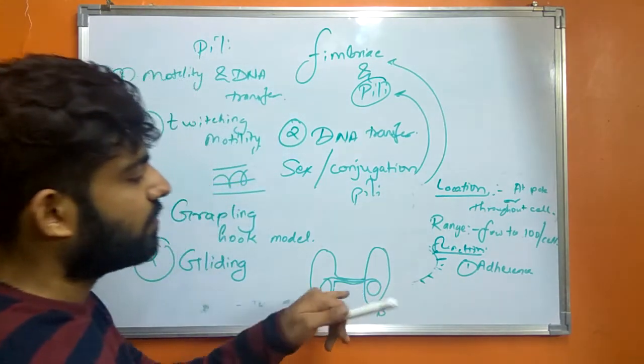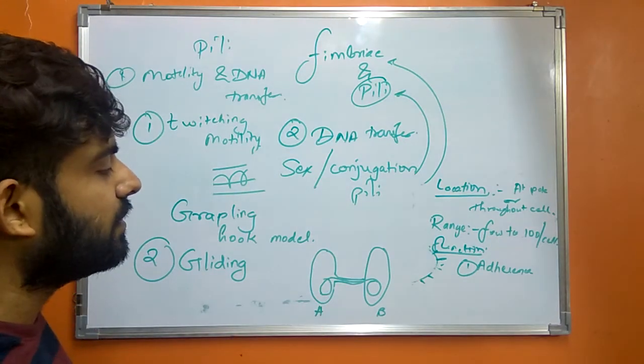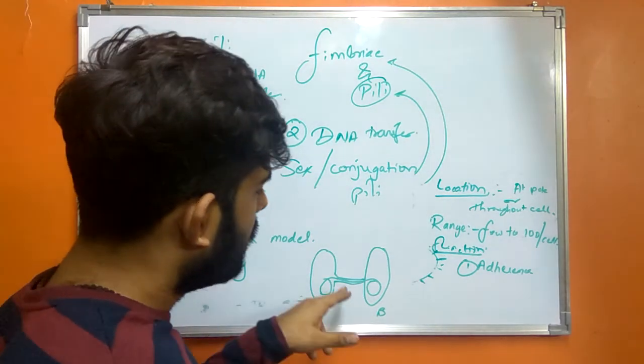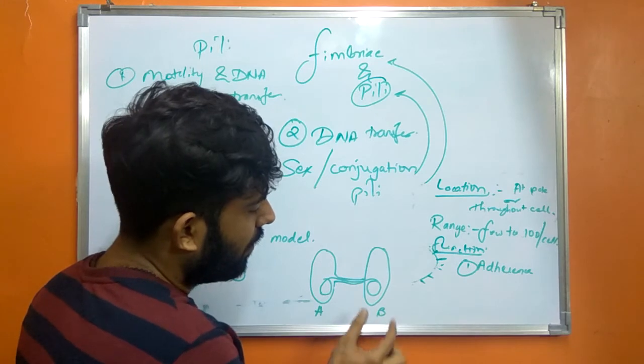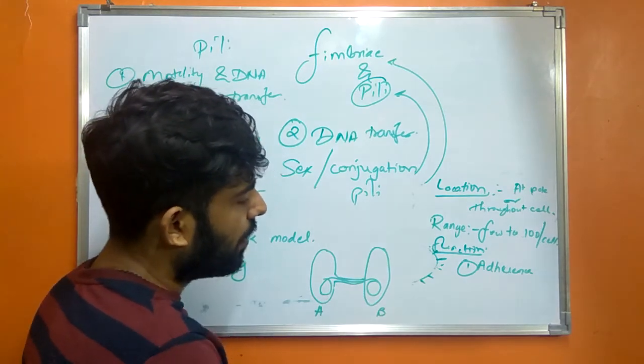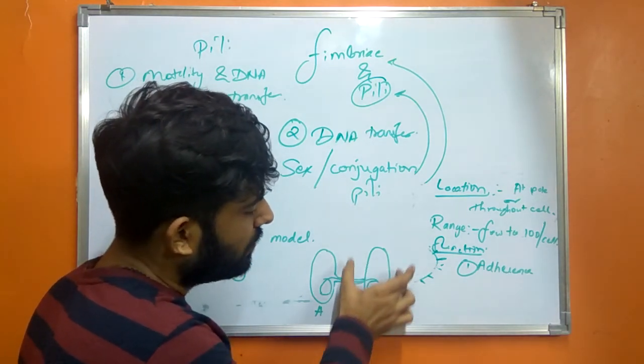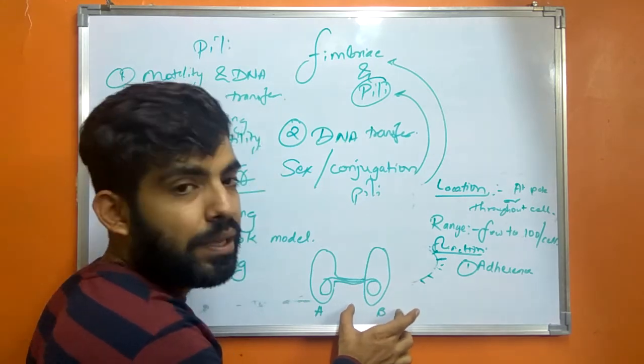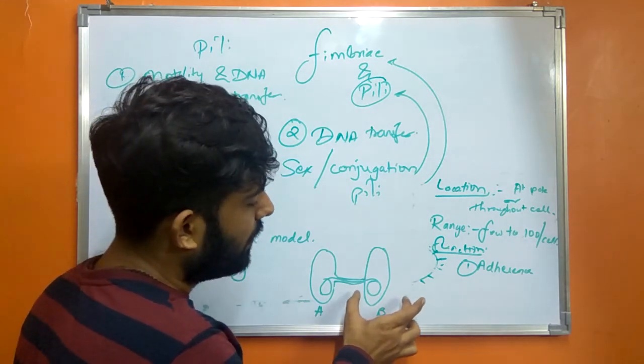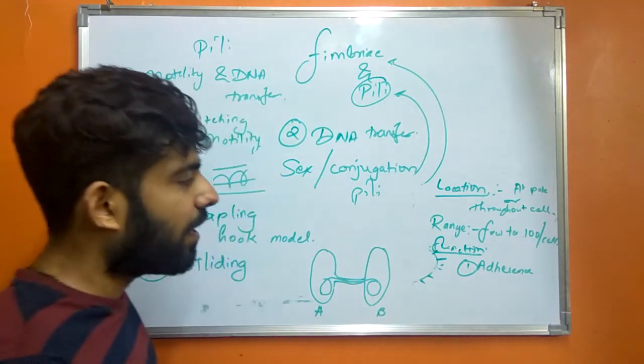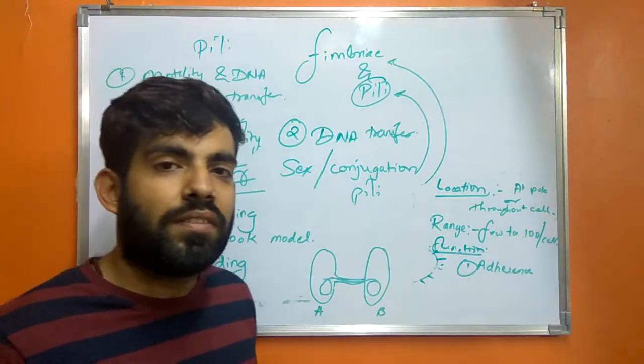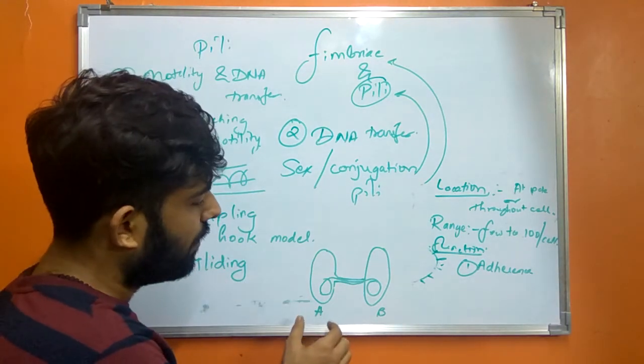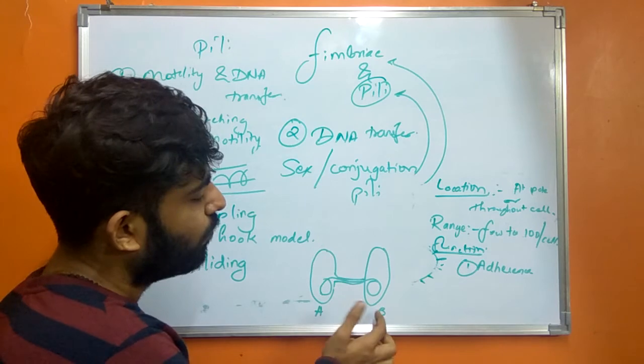So the transfer of genetic material from A to B can bring about the formation of a new characteristic into the recipient type of bacteria. A new characteristic can be antibiotic resistivity. Suppose the transfer of genetic material or DNA is from A to B, and A is tetracycline resistant, then B may also become tetracycline resistant.